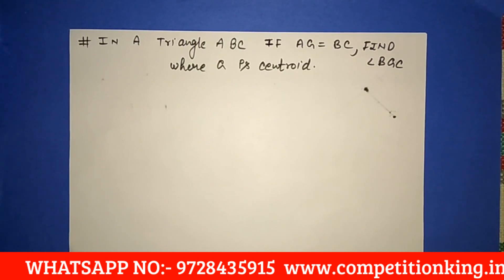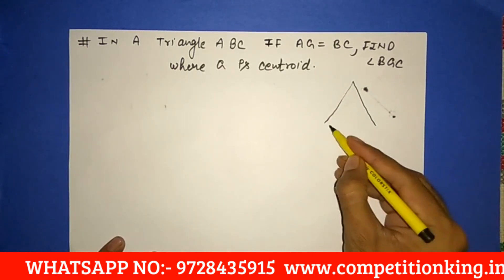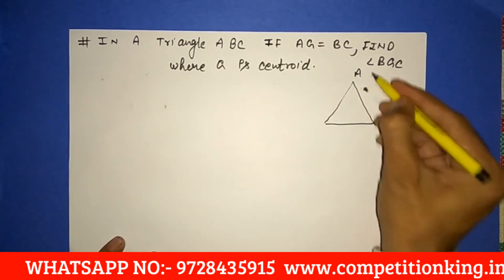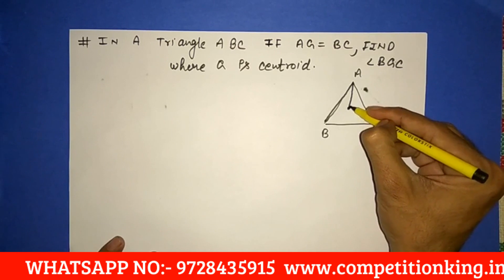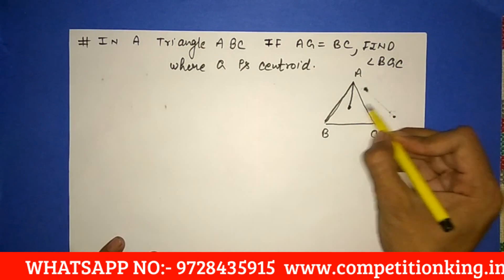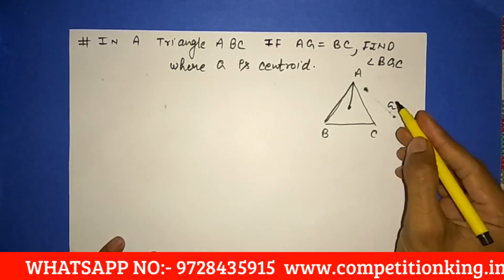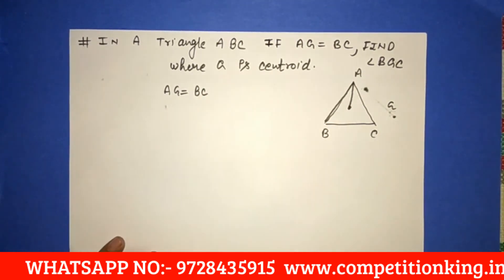Now see this question: In a triangle ABC, if AG is equal to BC, then find the value of angle BGC, where G is the centroid of the triangle. I am drawing triangle ABC with points B and C. G is the centroid, which is the point of intersection of the medians. It is given that AG is equal to BC.